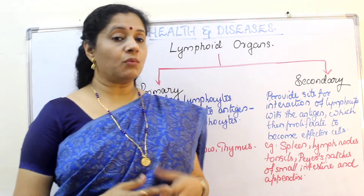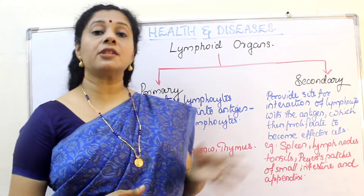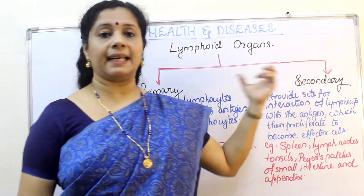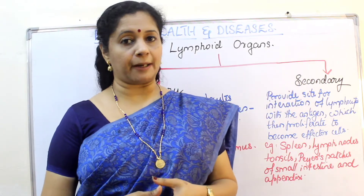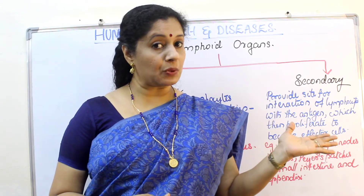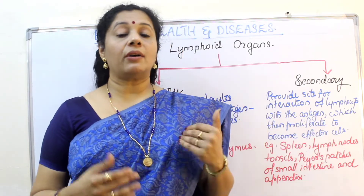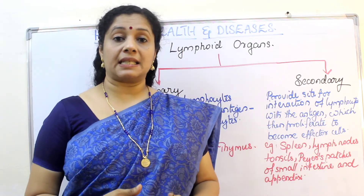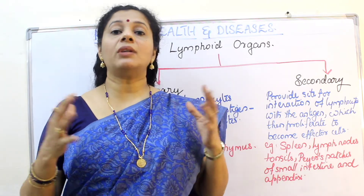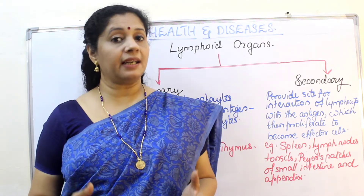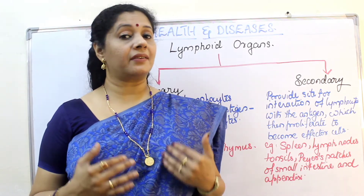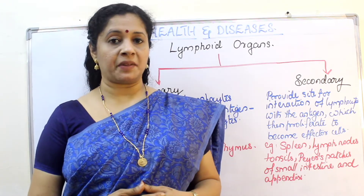Now let us move to the lymphoid organs — two types: primary lymphoid organ and secondary lymphoid organ. I am using the analogy from the previous video: our immune system cells are like soldiers in our body. Just like the army protects our country, these different cells are trained in different ways to protect us.